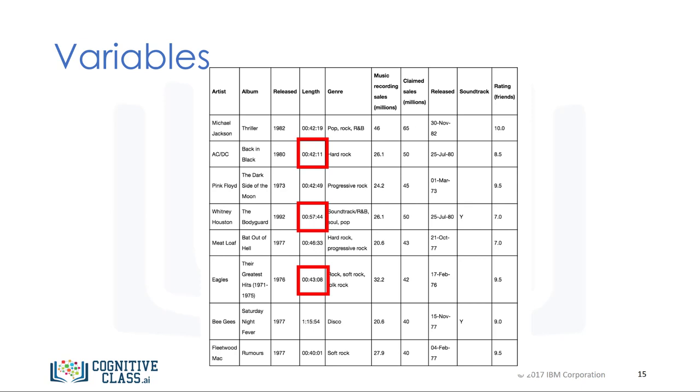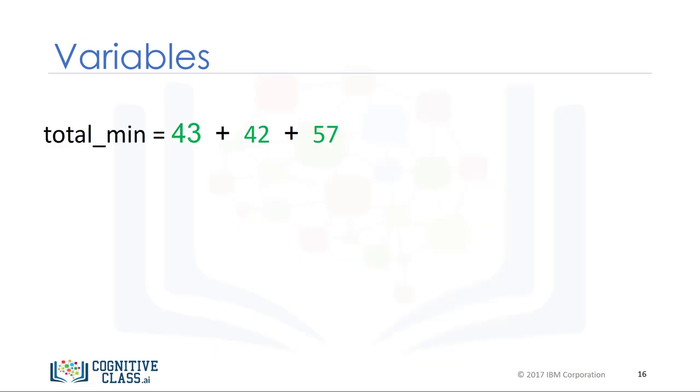Let's say we would like to convert the number of minutes in the highlighted examples to number of hours in the following music dataset. We call the variable that contains the total number of minutes, total_min. It's common to use the underscore to represent the start of a new word. You could also use a capital letter.